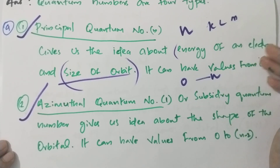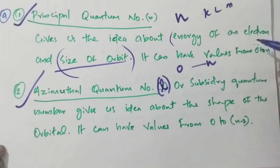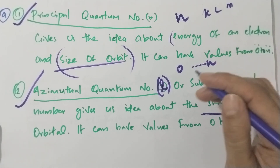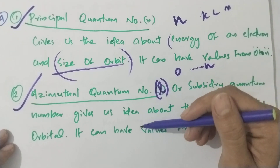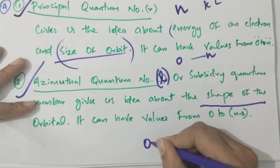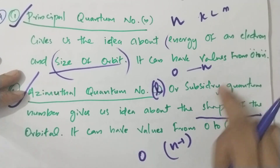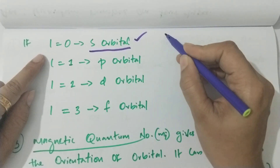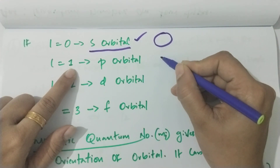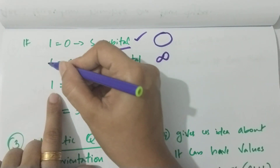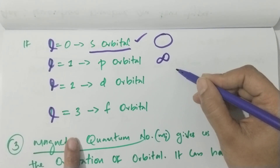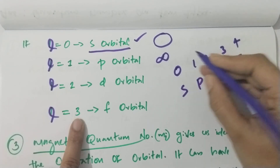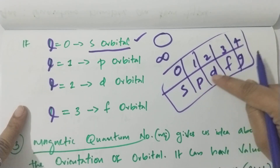The azimuthal quantum number L has values from 0 to n minus 1. When L equals 0, that is the S orbital. When L equals 1, that is the P orbital. When L equals 2, that is D, and L equals 3 is F. So the orbitals are S, P, D, F, G corresponding to values 0, 1, 2, 3, 4.